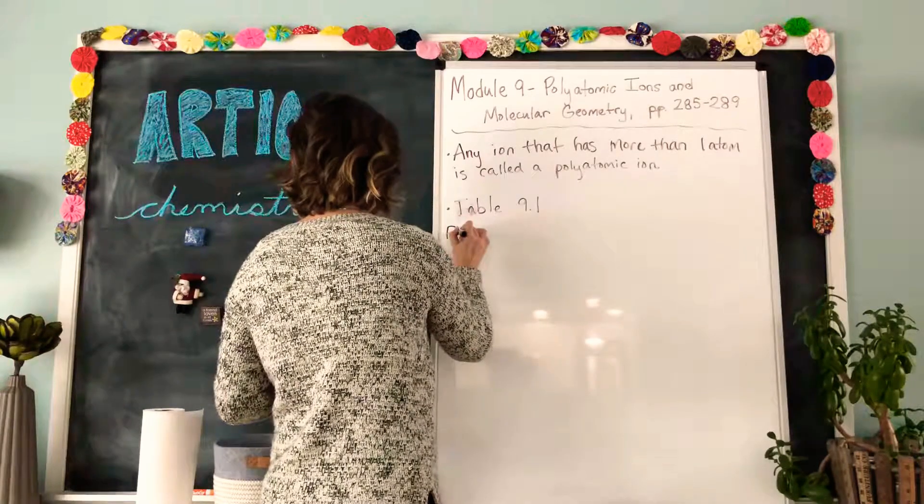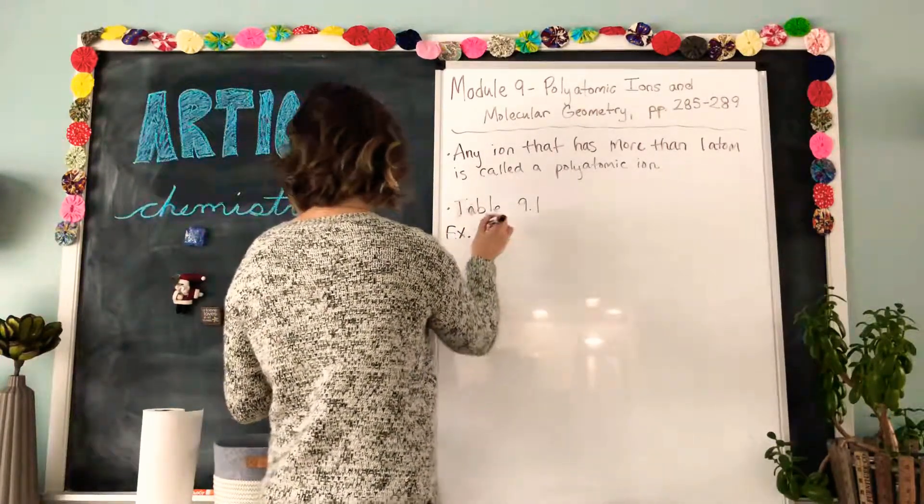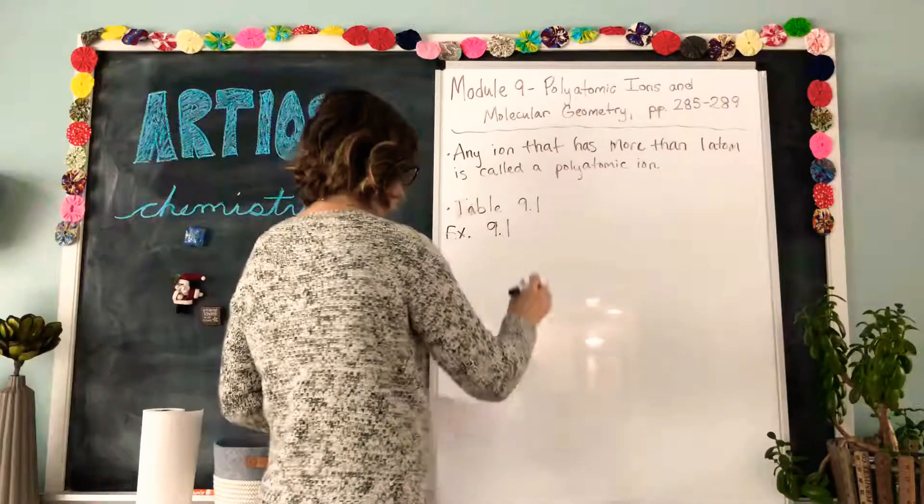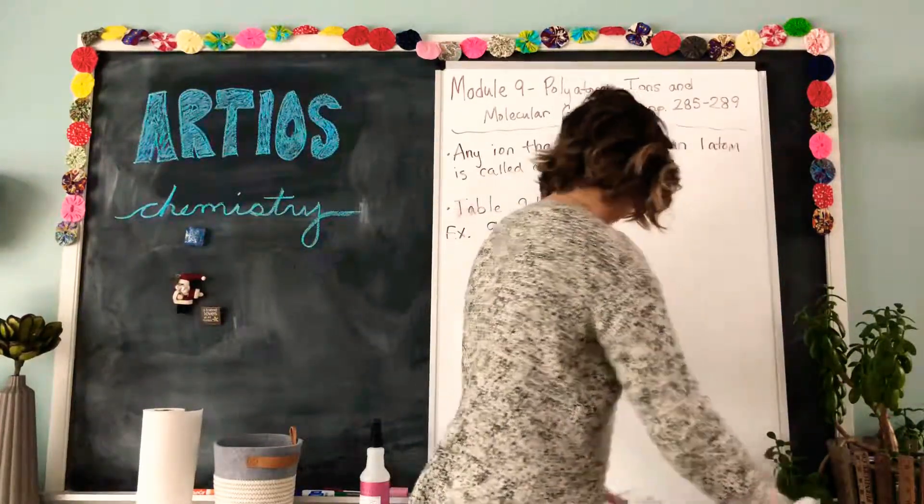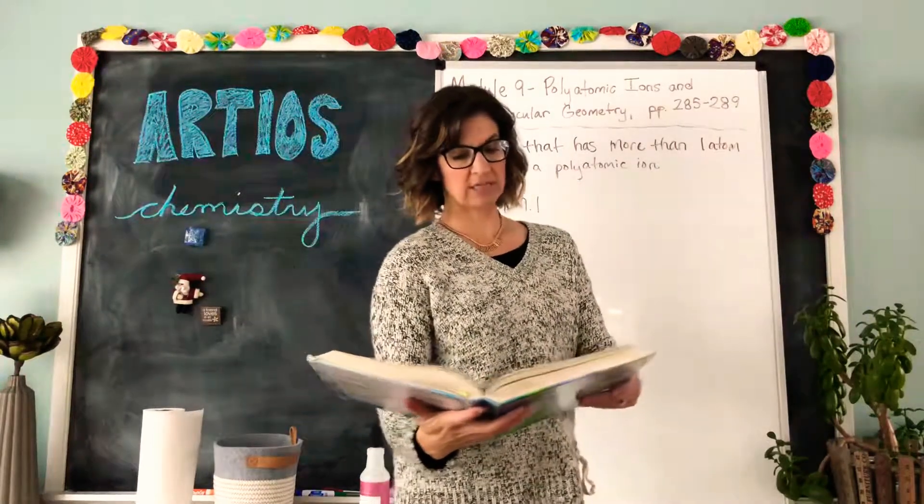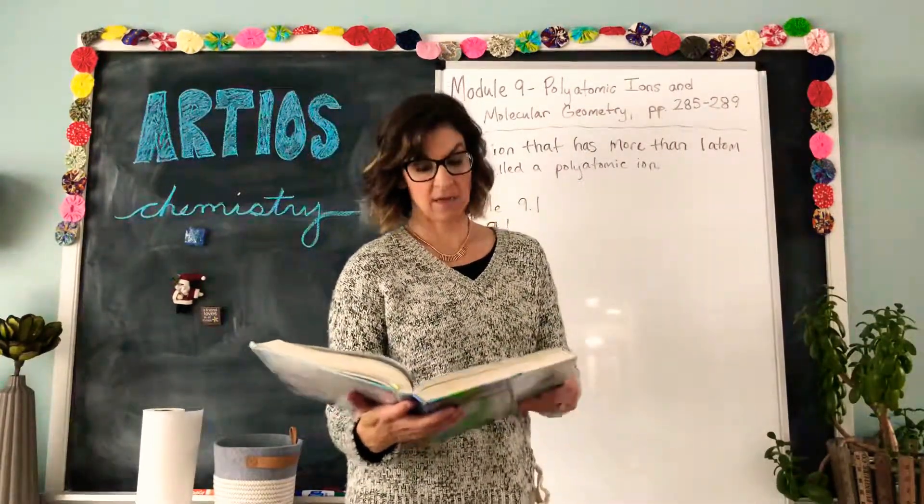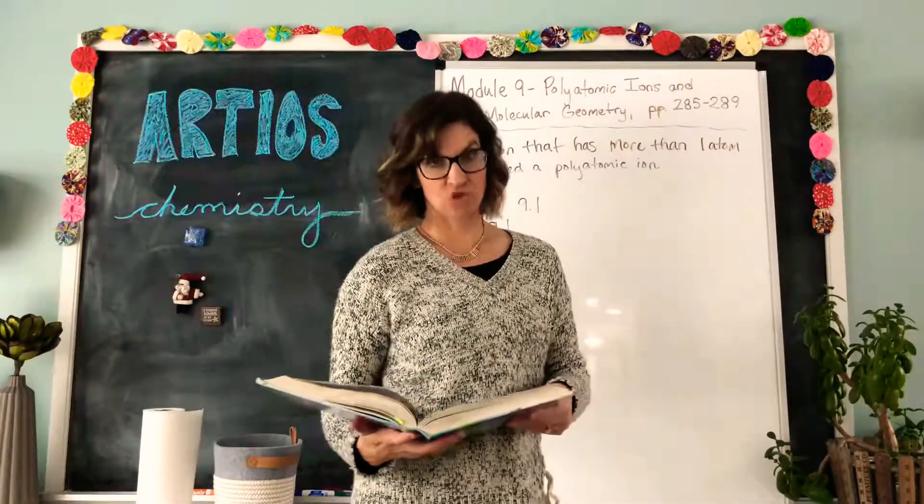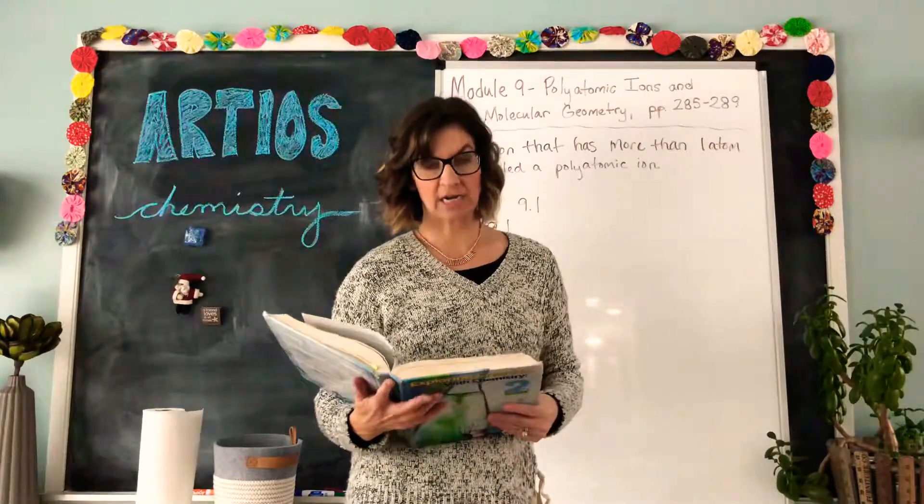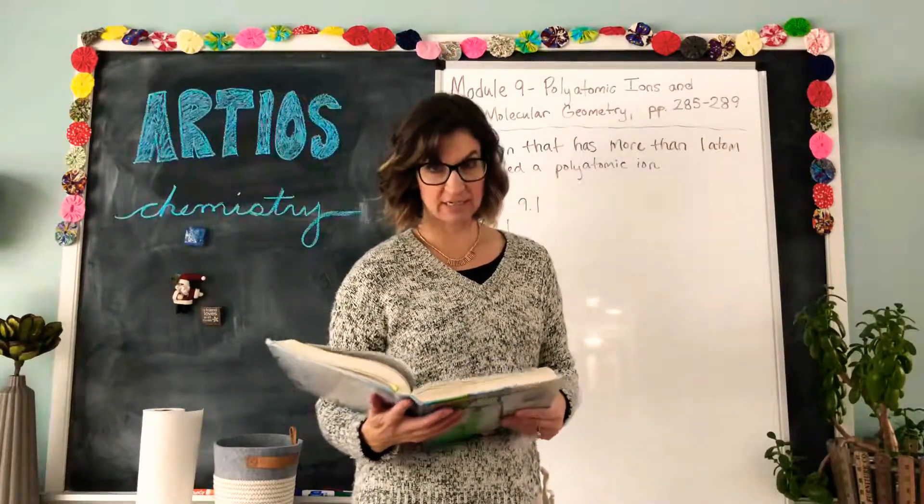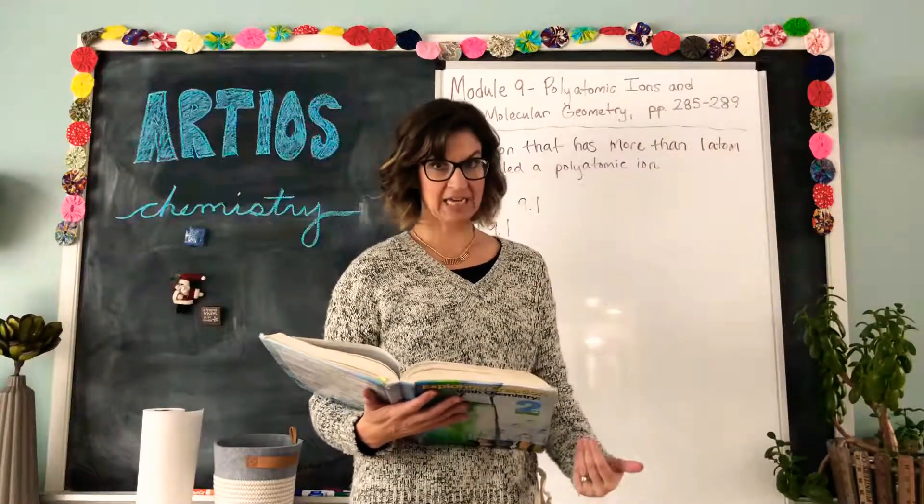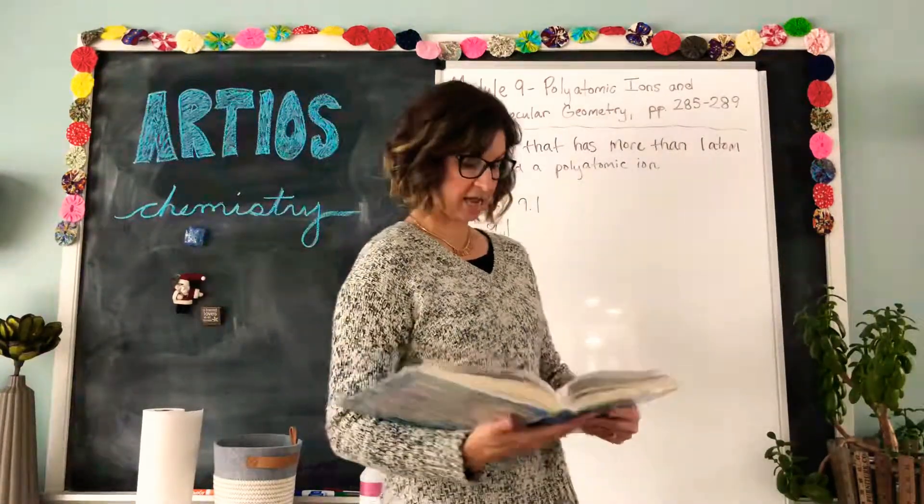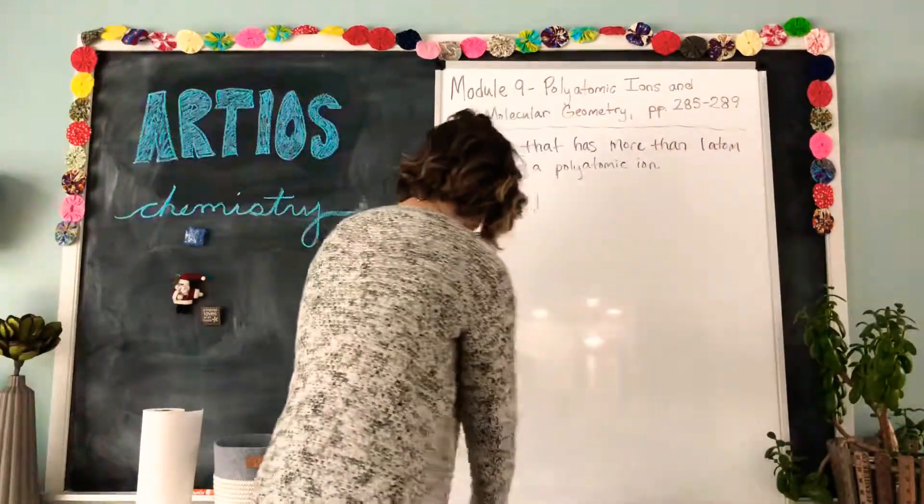Now let's try some examples. Example 9.1 says what is the chemical formula for calcium nitrate? So you should recognize that the word nitrate is not an element, but if you know your polyatomic ions you will know that it is a polyatomic ion. So we have to come up with a chemical formula for it.